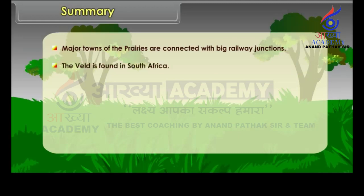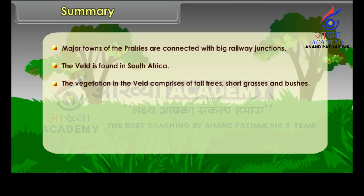The Veld is found in South Africa. The vegetation in the Veld comprises tall trees, short grasses, and bushes. The main crops grown in the Veld are maize, fruits, and tobacco.